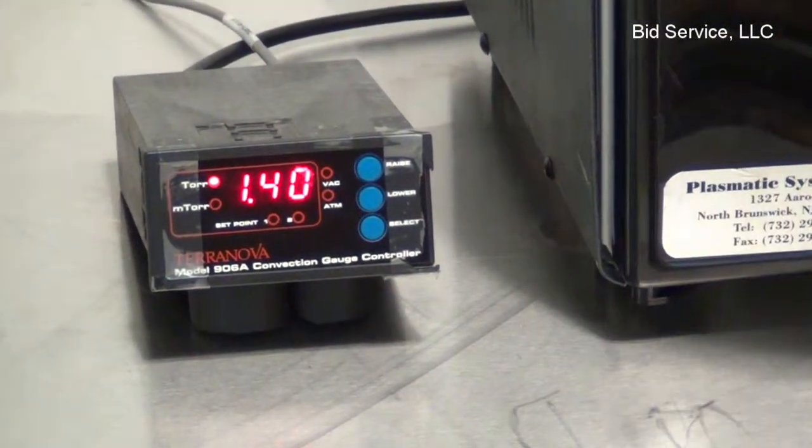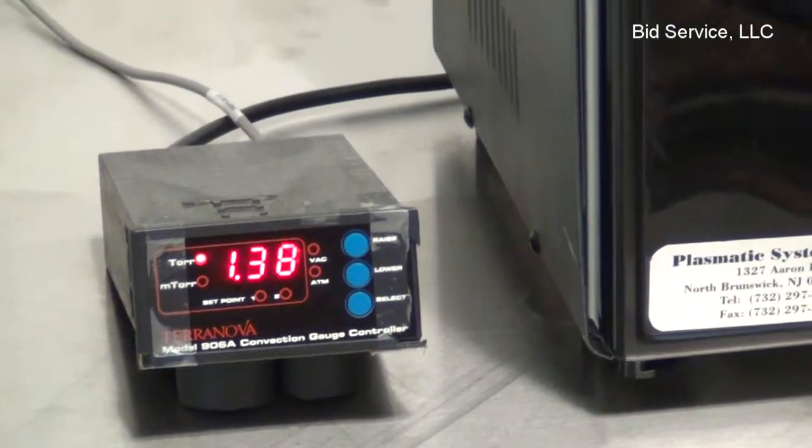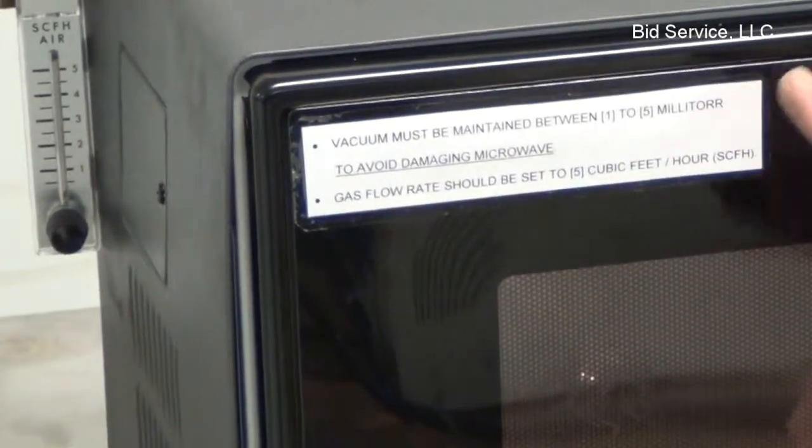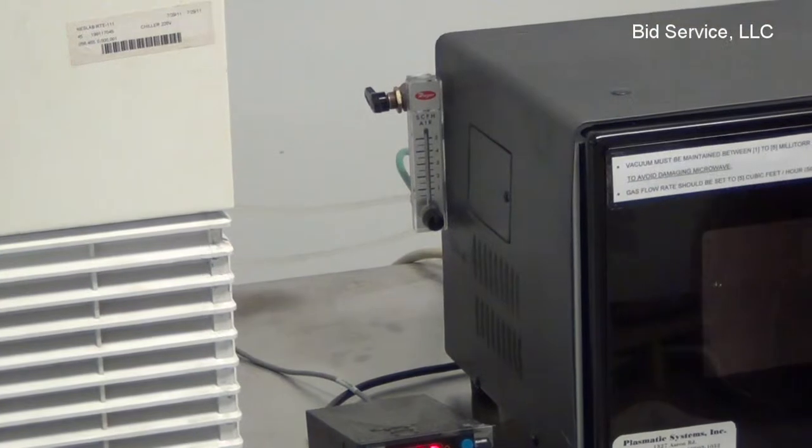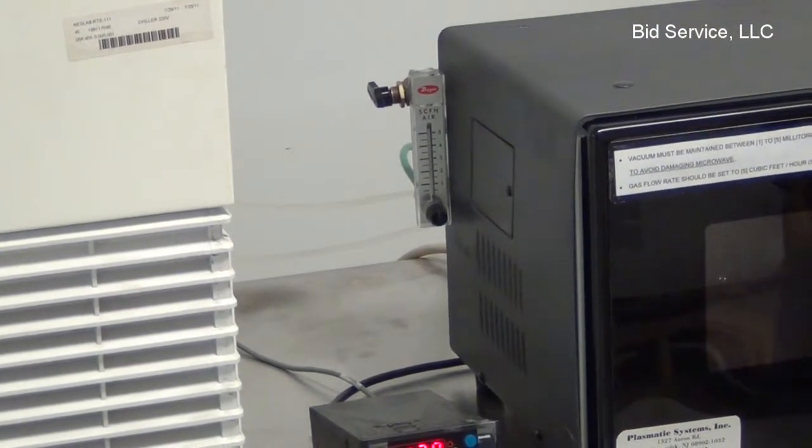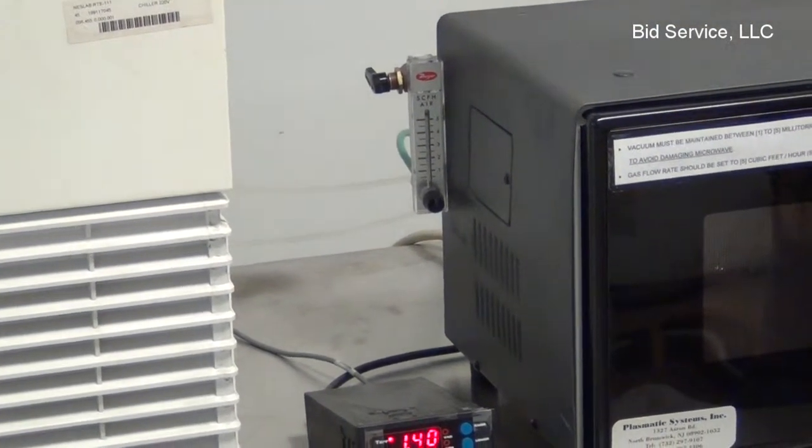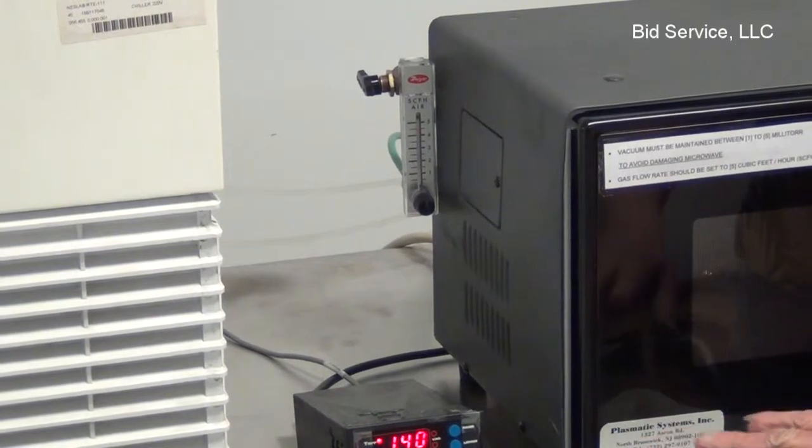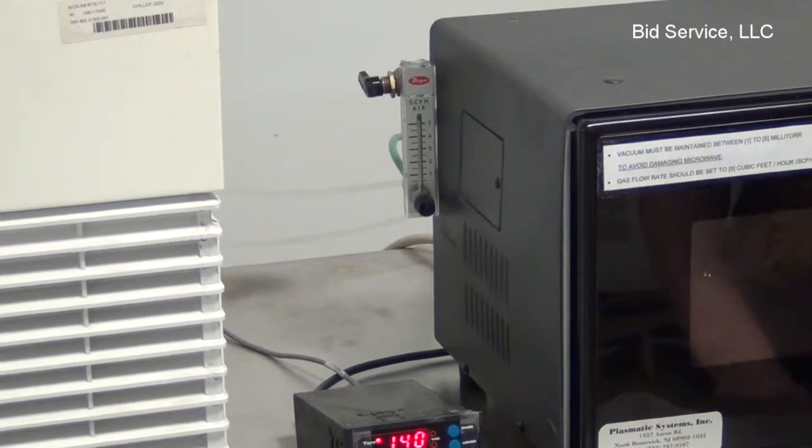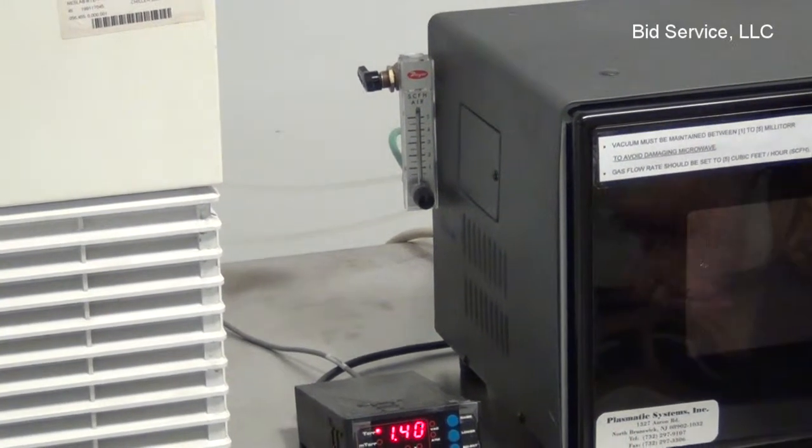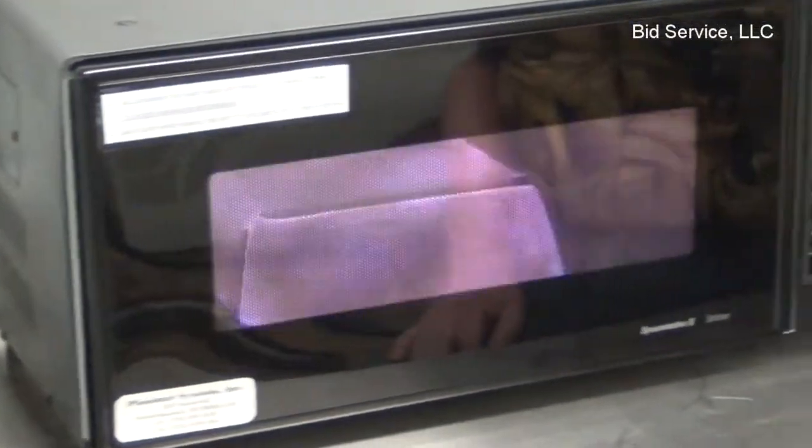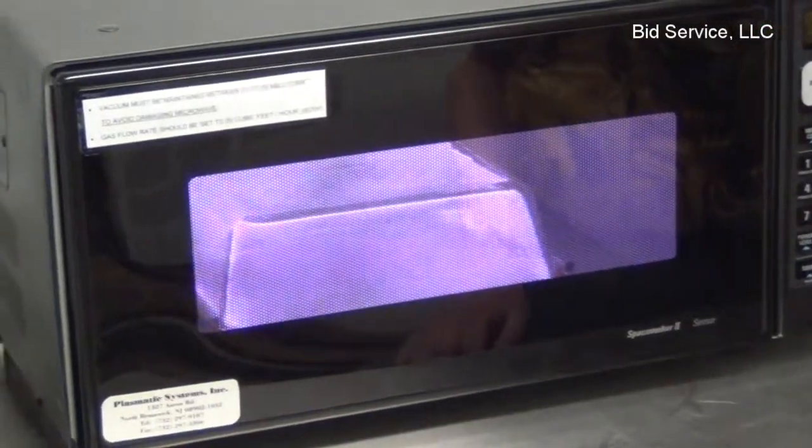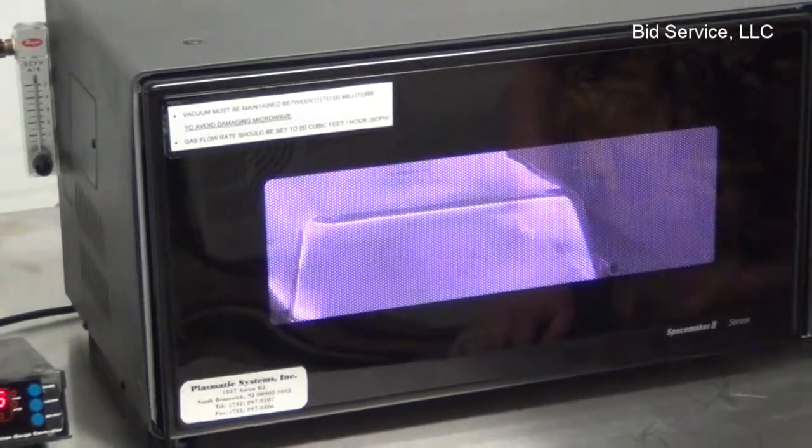Also, gas flow rate should be set at 5 cubic feet an hour. This is also important and can be regulated by this flow meter right here. Now, once your cooling water is sufficient, you have sufficient vacuum, and you have sufficient flow of gas, it's then as simple as starting it like any microwave at home, and the plasma will ignite.